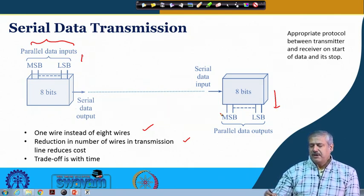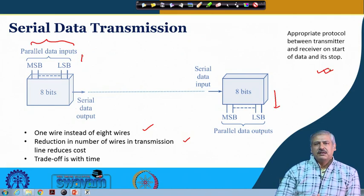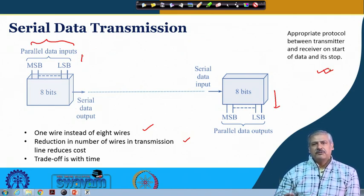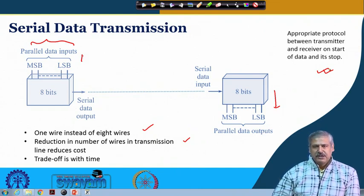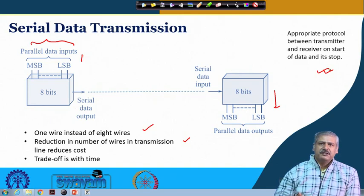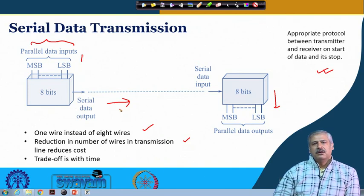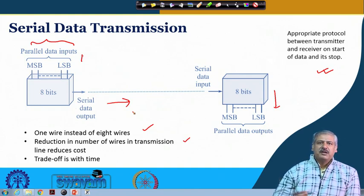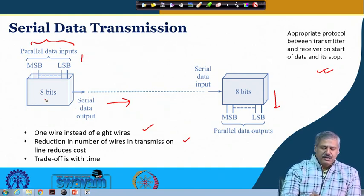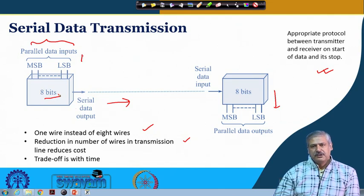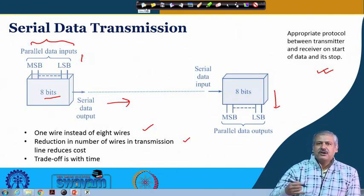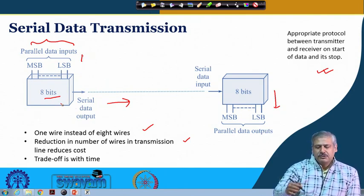We need to have an appropriate protocol to identify the start and stop of the data message, so that the next 8 bits are again appropriately picked up. The trade-off here is between the rate at which you generate data and the rate at which you transfer it — the transfer rate needs to be proportionally higher depending on the number of bits being converted. This reduces cost: parallel data is pushed out serially through a shift register.